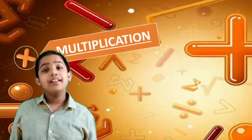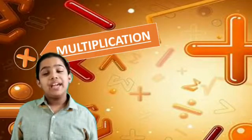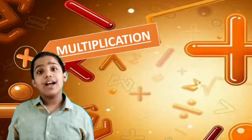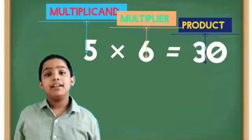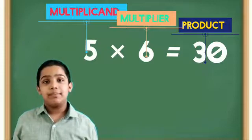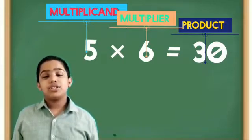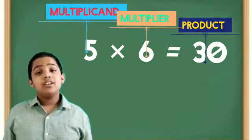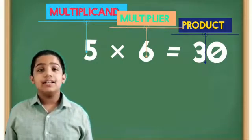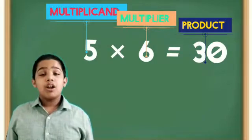Multiplication is a quick and powerful way in which we add the same number over and over again. The number which is being multiplied is called the multiplicand and the number by which it is being multiplied is called the multiplier. The answer of multiplication is called the product.